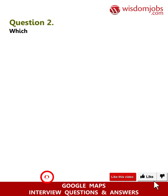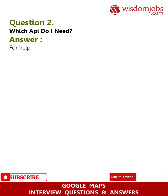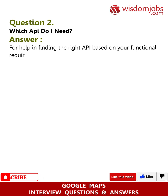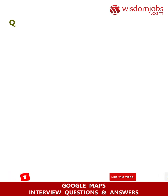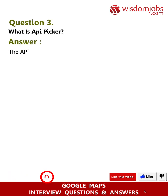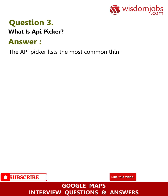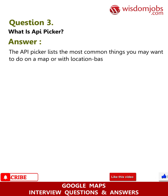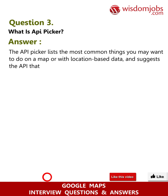Question 2: Which API do I need? Answer: For help in finding the right API based on your functional requirements, use the API Picker. Question 3: What is the API Picker? Answer: The API Picker lists the most common things you may want to do on a map or with location-based data and suggests the API that most suits your needs.